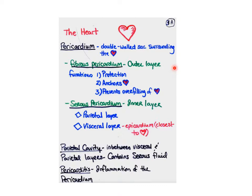The fibrous pericardium — that really tough fibrous layer — has three functions: it's for protection, it anchors the heart, and it prevents it from overfilling.